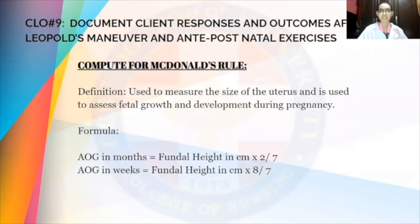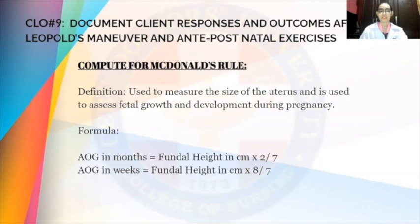Next, we compute for AOG using McDonald's rule. This is used to measure the size of the uterus, and it is also used to assess fetal growth and development during pregnancy. There are two formulas: either we use AOG in months or AOG in weeks. AOG in months equals fundal height in centimeters times 2, divided by 7. For weeks, it equals fundal height in centimeters multiplied by 8, divided by 7.